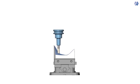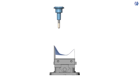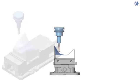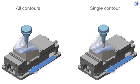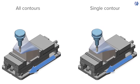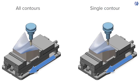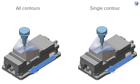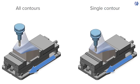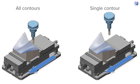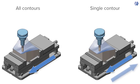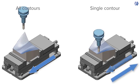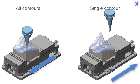Two new options are available: all contours and single contour. All contours sets a single cutting direction and progression on all contours. Single contour allows the cutting direction to change for each individual contour.